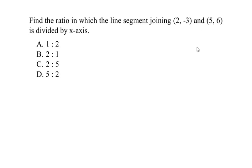So here we have a line with two points on it. One point is at (2, -3) and another one is at (5, 6). And that line is divided by the x-axis. To understand this let me draw these two points on the coordinate axis.